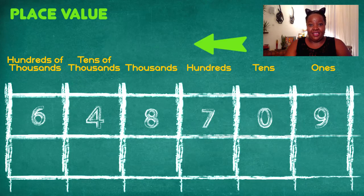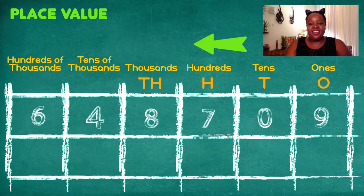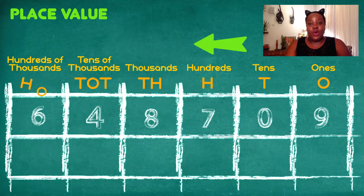Here is a little shortcut when you are labeling the top row: O for ones, T for tens, H for hundreds, TH for thousands, TOT for tens of thousands, and HOT for hundreds of thousands. That's just my little shortcut for you.